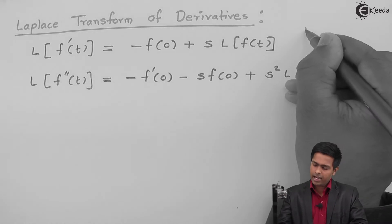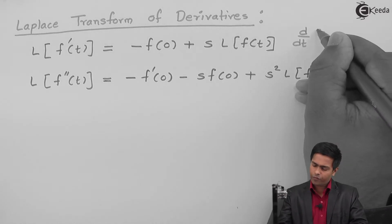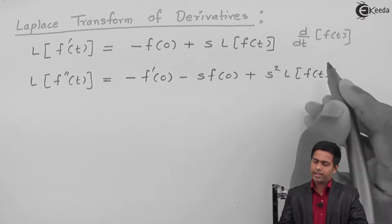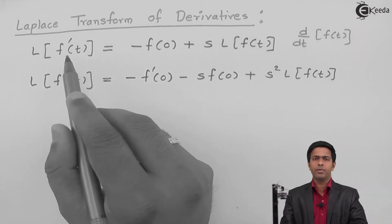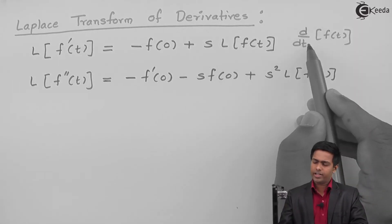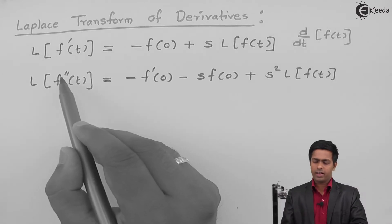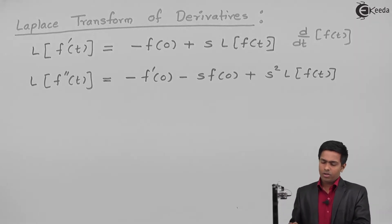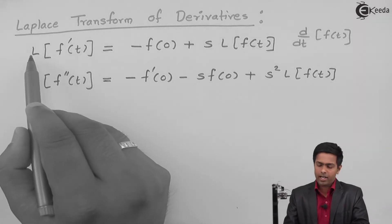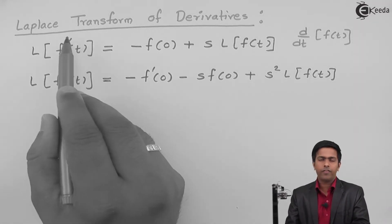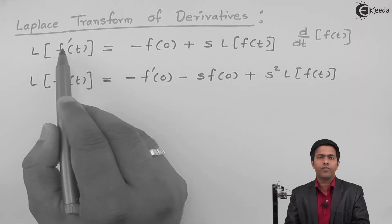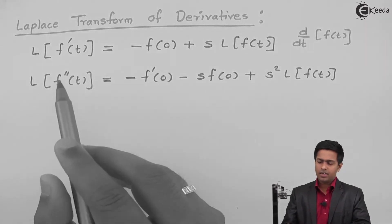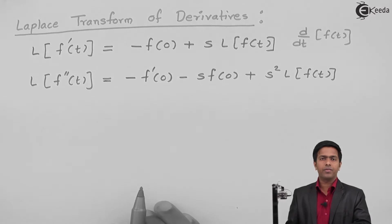The derivative of f(t) with respect to t is given as f'(t). Similarly, the second order derivative of f(t) is called f''(t). Since we are finding the Laplace of the derivative of f(t), this property is called the Laplace transform of derivatives.